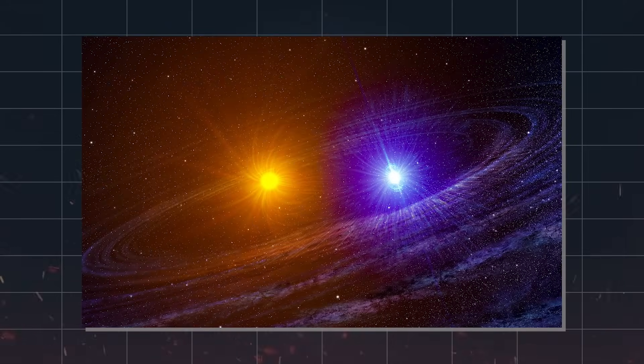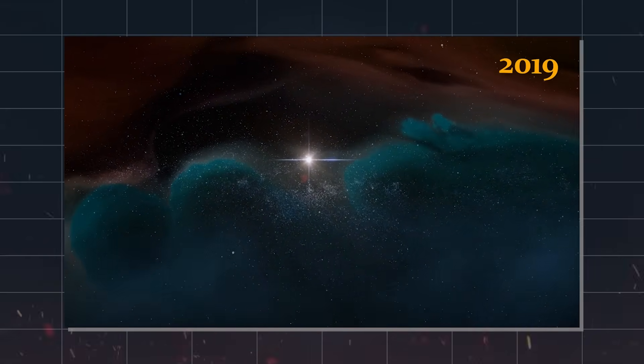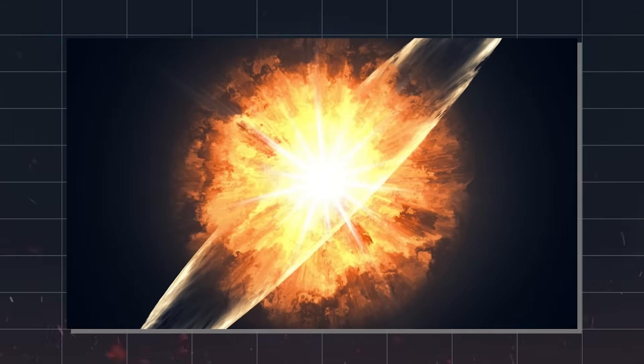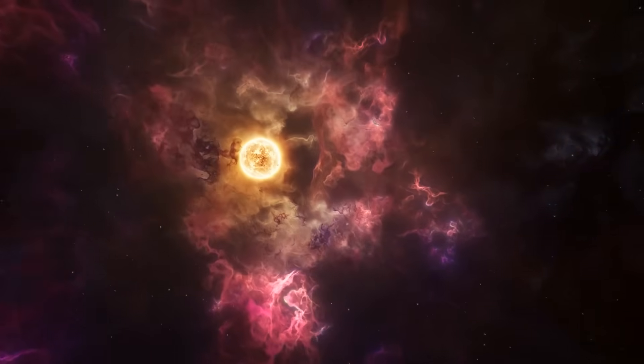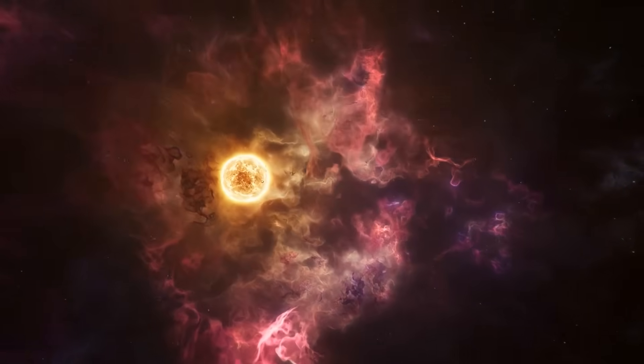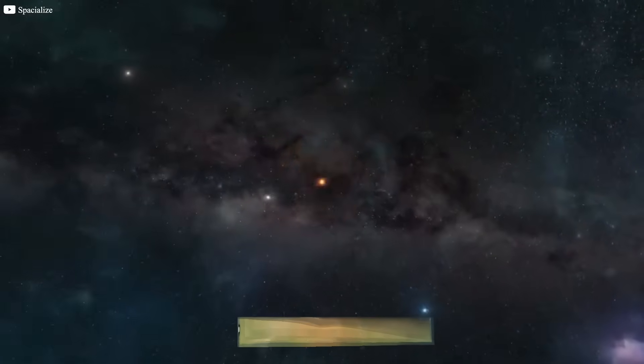Though they share many similarities, the two stars have different characteristics that make each one unique. Betelgeuse has been the subject of much speculation in recent years due to a sudden dimming event in 2019, leading many to wonder if the star was about to explode. While it hasn't yet gone supernova, Betelgeuse is expected to do so in the relatively near future. When it does, its explosion will be visible even in the daytime, just like Antares.